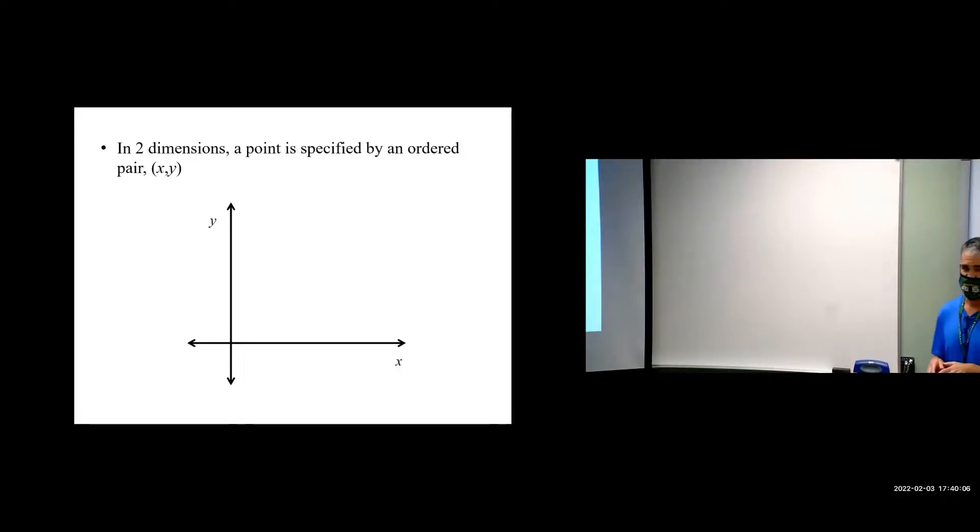In two dimensions, we identify a point as X and Y. It is some horizontal and vertical distance away from the origin. We have some point, it's some XY, and it lives out in the two-dimensional plane.